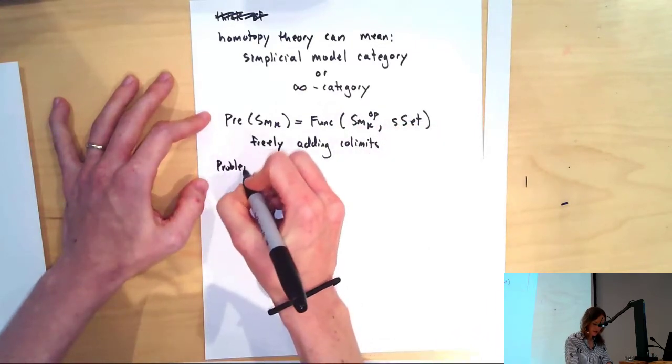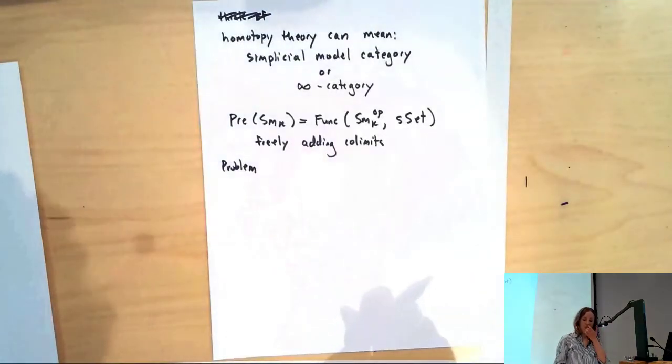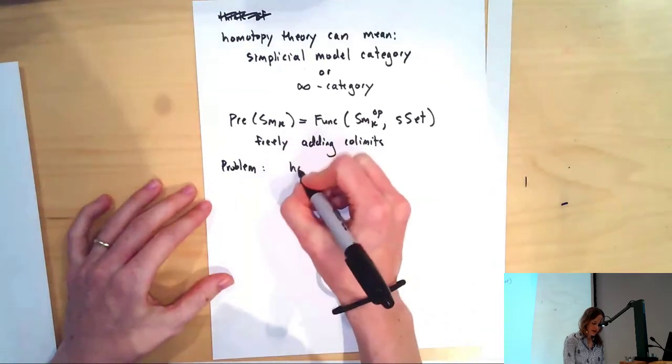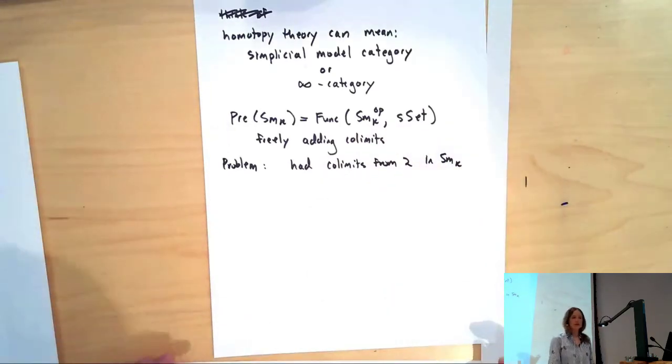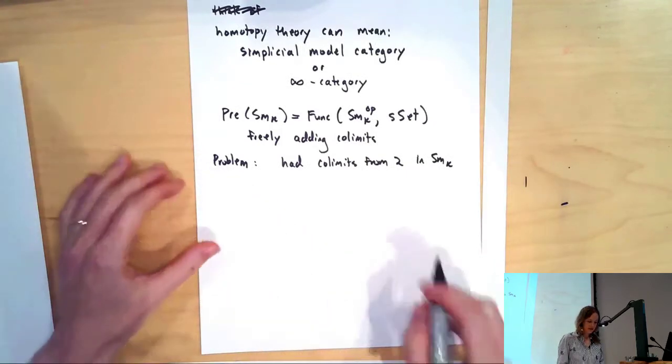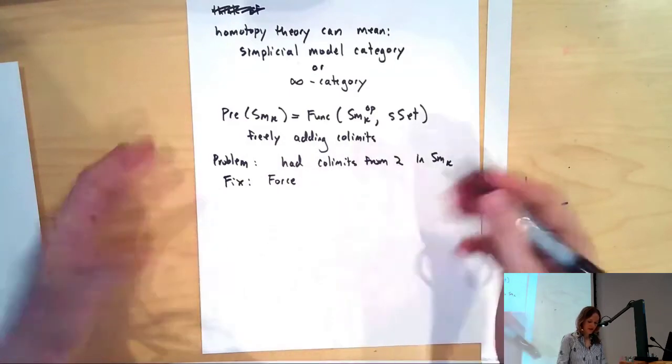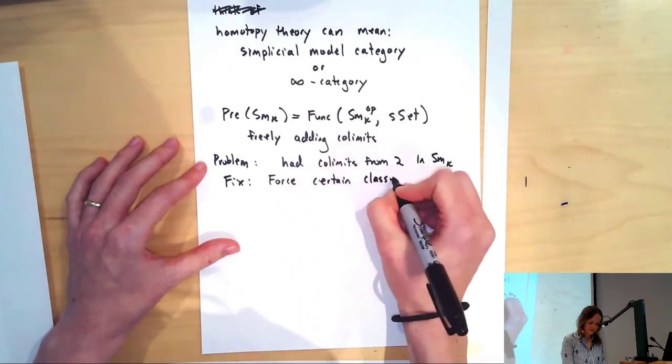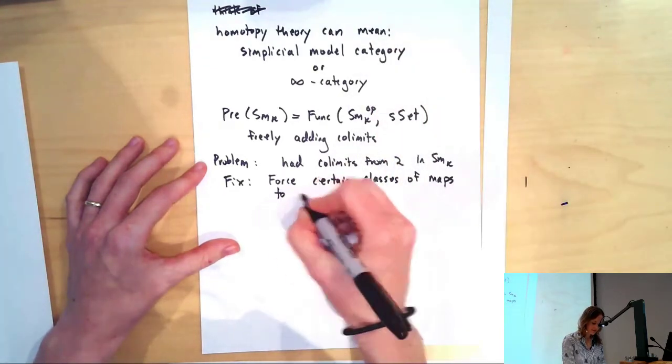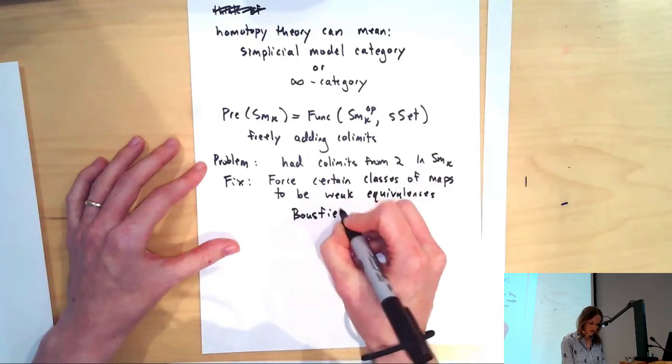The problem is that we want example two to give co-limits in our new spaces. So we had co-limits from smooth K: we can glue open sets of schemes together and get other schemes. And we want those still to be gluings now that we're allowing ourselves to glue other things. We can force these co-limits to remain co-limits, we can force certain classes of maps to be weak equivalences using a tool called Bousfield Localization.